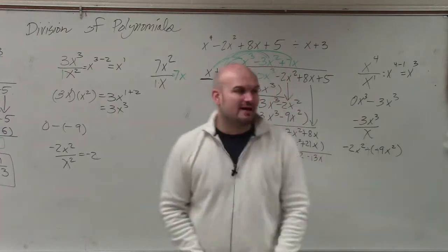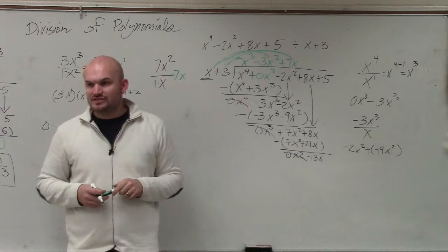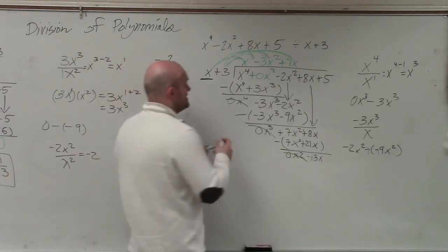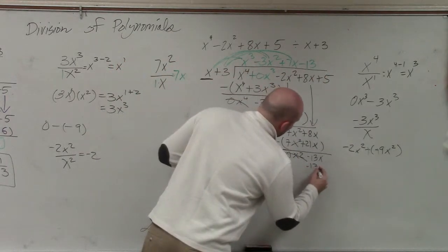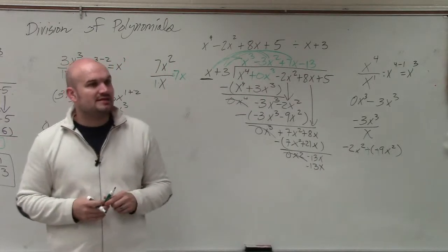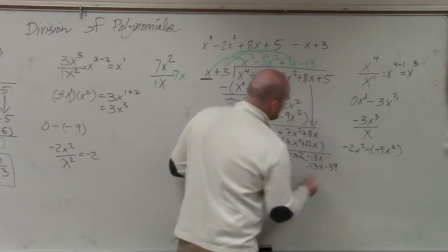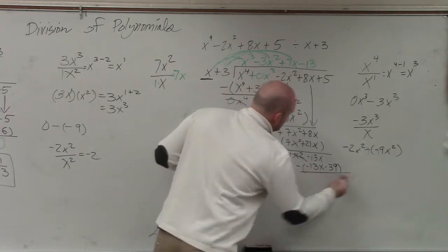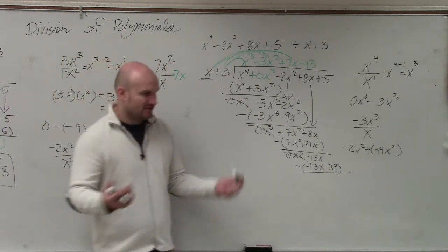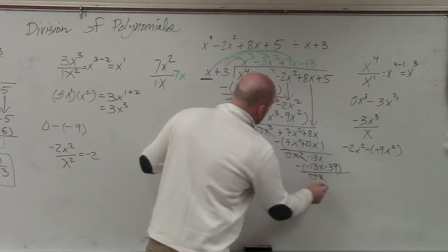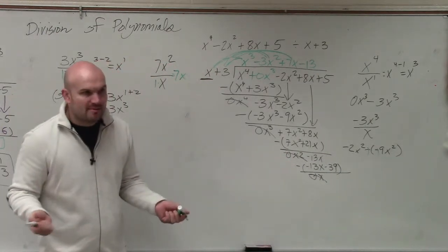Now we do the same thing again. How many times does x divide into a negative 13x? Negative 13 times. Negative 13 times x is a negative 13x. Negative 13 times 3 is going to be a negative 39. Subtract negative 13x minus a negative 13x is going to be 0x, which is the same thing. Do you guys see how that happens? See how that happened every single time? You're always going to get the same number back for that first term.